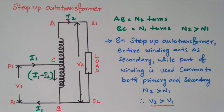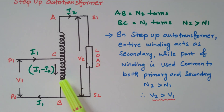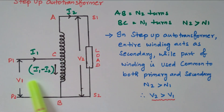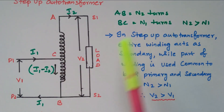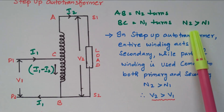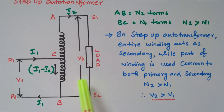Now we will look at the step-up auto transformer. Here too there is only one winding, but the entire winding is used as the secondary winding (S1 and S2), while only part of the winding is used as the primary. Terminals are labelled A, B, and C. AB is the entire winding with N2 turns used as secondary; BC is the partial winding with N1 turns common to primary and secondary. Since N2 is greater than N1, V2 is greater than V1 — making it a step-up transformer.